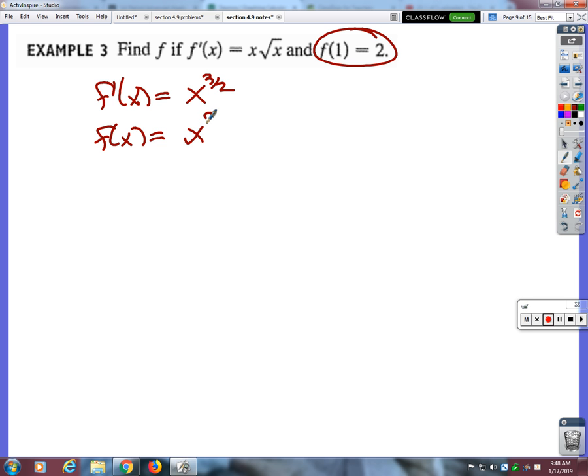If I add one to that, it becomes x to the five halves over five halves plus c, which we're gonna mess with in just a minute. And then just like we've been doing, if I'm dividing by five halves I'm really multiplying by the reciprocal. Okay, so nothing new there, right? Okay, what's different now is since we know this point on the graph, we're going to figure out what c is. Okay, because what this means right here is that if I plug one into the function I get two as an answer.